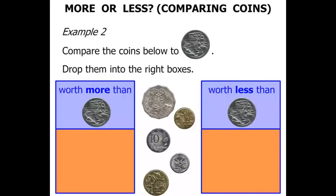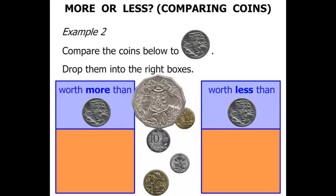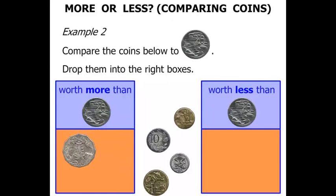So let's look at one coin at a time. This first one, a 50 cent piece. A 50 cent coin is worth more than 20 cents, so let's move that across there. The next coin, a gold coin, a $2 coin. Again, this is worth more than 20 cents.